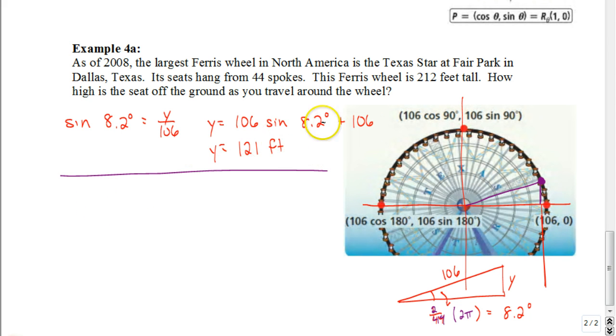So to find out what y equals, we would take 106 times the sine, and this time we're going to do this one in radians. So 2 pi over 44 times 2π, or 1π over 22 times 2π, would give me 2π over 22. And then we have to add to that the height above the horizontal that we would have, so another 106. And when you type that on your calculator this time around, you end up getting 136 feet.